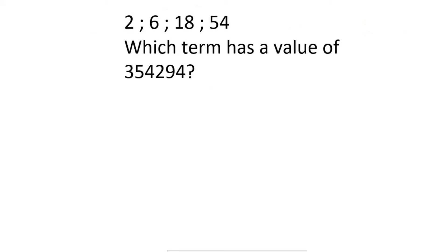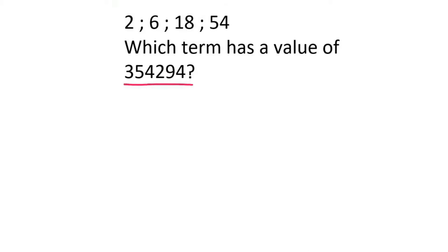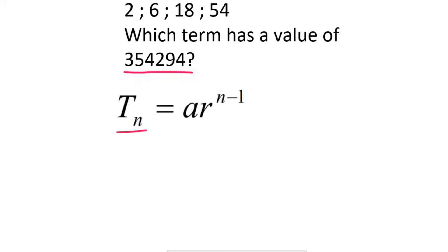We have the same sequence that we saw in question 3, so we know that it's geometric, but now they're saying which term has a value of a big number. So we use the geometric formula, and we already know the value. So what we do is we say 354294 equals 2.